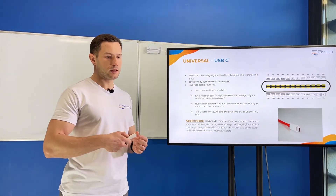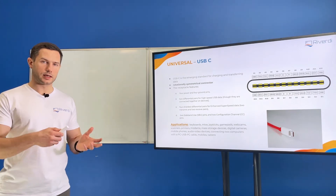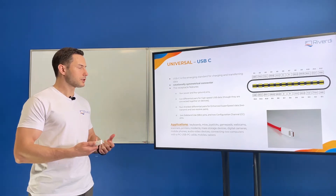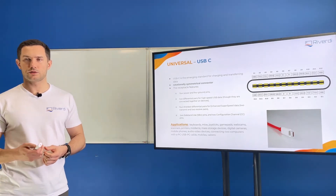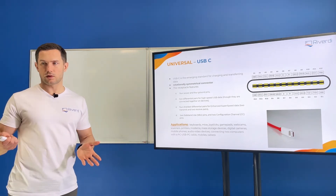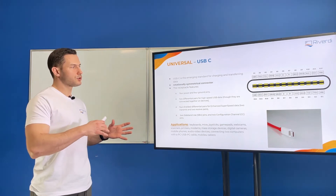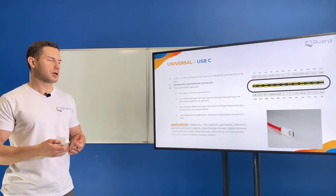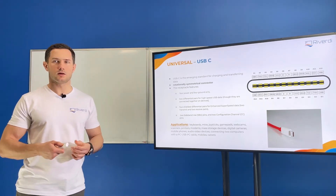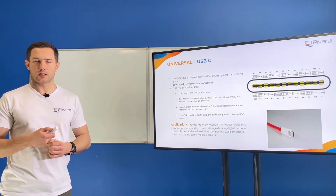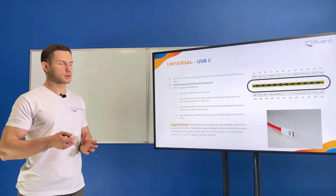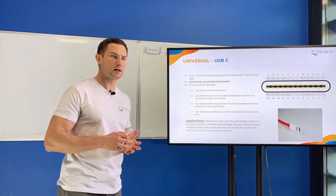USB-C is so universal that it can not only transfer data, but because it's fast enough it can also transfer image. It can also transfer a lot of power — up to 100 watts — because we can increase the voltage. Regular USB is usually around 5V at maybe 0.5A to 1A, so just a few watts. With USB-C we can go as high as 20V at 5A, giving us up to 100 watts of power.